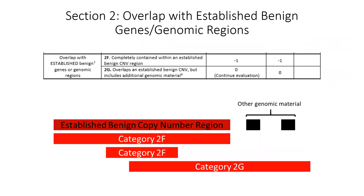Our scoring metrics also provide guidance for intragenic deletions within known haploinsufficient genes. This scenario falls within the sequence variant interpretation evidence category PVS1 — predicted null variant within a gene where loss of function is a known mechanism for disease. The ClinGen sequence variant interpretation working group recently published a detailed decision-making guide to help determine if a particular variant meets this criteria. We recommend adopting this flowchart and have associated specific point values for use in our metric. This will also be discussed in detail during our February 6th webinar. One must also consider whether the CNV overlaps with established benign genomic regions — defined as those curated by the ClinGen dosage sensitivity process, generally observed at a frequency of 1% or higher in the general population, not elevated in cases compared to controls, and not associated with any specific condition.